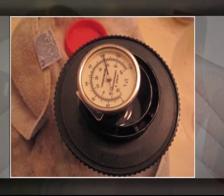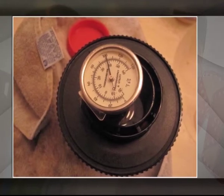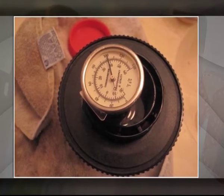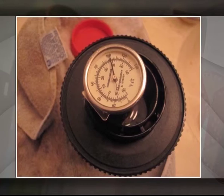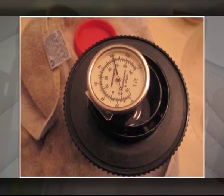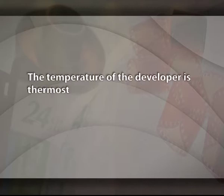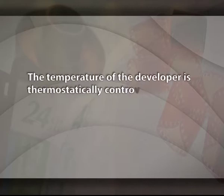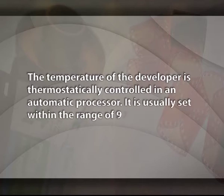Development temperature. The activity of the developer changes with temperature. An increase in temperature speeds up the development process and increases film sensitivity, because less exposure is required to produce a specific film density. The temperature of the developer is thermostatically controlled in an automatic processor, usually set within the range of 90 to 95 degrees Fahrenheit.